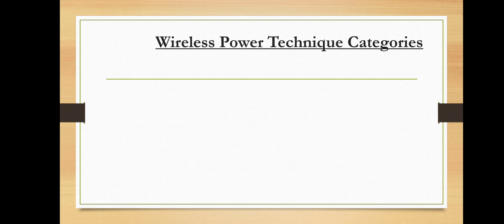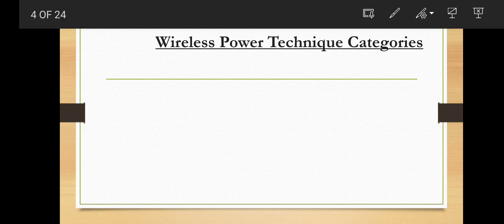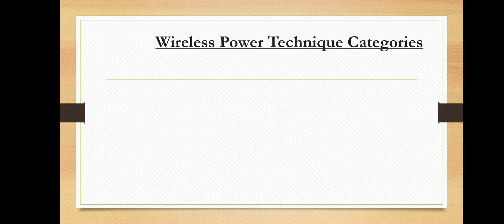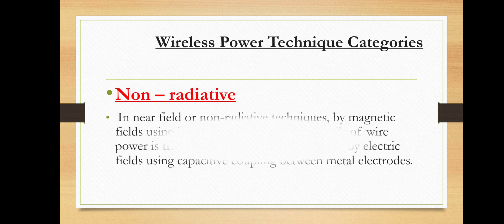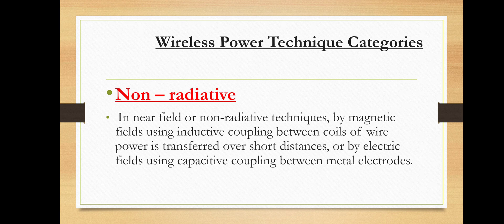There are different wireless power technique categories. The first is non-radiative. In near-field or non-radiative techniques, power is transferred over short distances by magnetic fields using inductive coupling between coils of wire, or by electric fields using capacitive coupling between metal electrodes. In wireless technology, inductive coupling is widely used. Applications include phones, electric toothbrushes, RFID tags, and chargers for implantable medical devices like artificial cardiac pacemakers and electric vehicles.